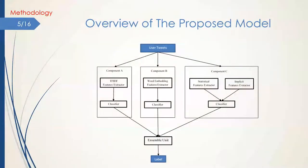Our provided model for this task consists of three different components, each designed to utilize a set of features. In components A and B, we use text representations as features, particularly TF-IDF and word embeddings. For component C, we combine statistical and implicit features. Each component of the model processes its related features with a distinct classifier. Then, the results of the classifiers are aggregated with an ensemble method. All groups of features will be explained in the next slides.